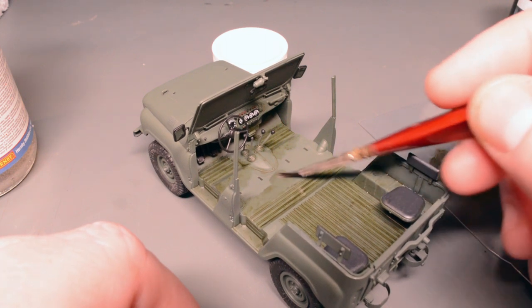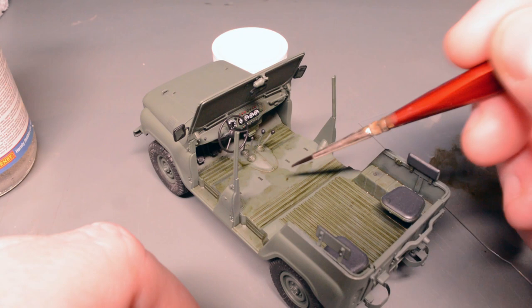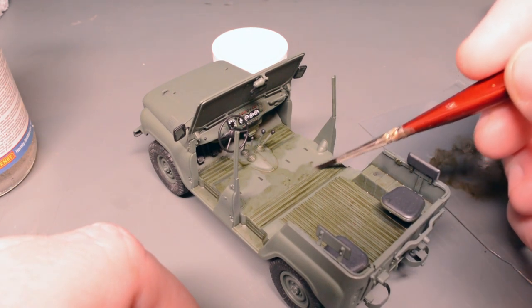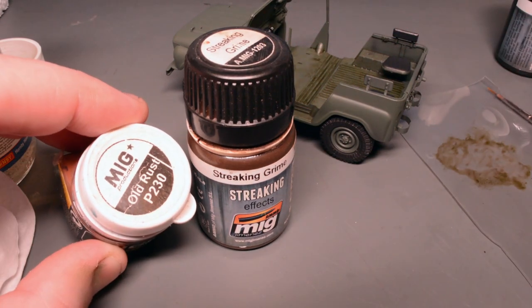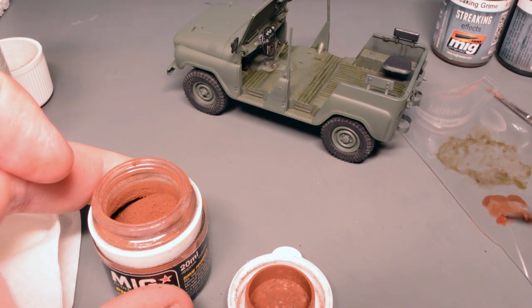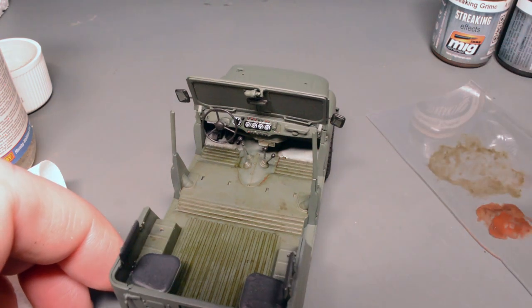I used this to my advantage and soaked the thinners in and then did a little bit of a mapping effect by dabbing in some heavier concentrations in different areas. I built the effect up gradually before switching over to normal streaking grime and mixing in some Mig Pigments old rust to create myself a bit of a rusty wash using the enamels as a fixer. I dabbed this into the deeper corners but I didn't go over the top with it as I didn't want the interior to look too rusty.